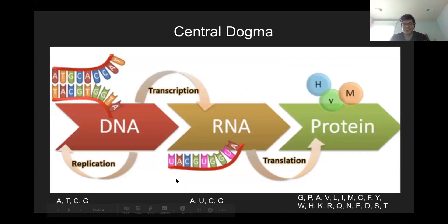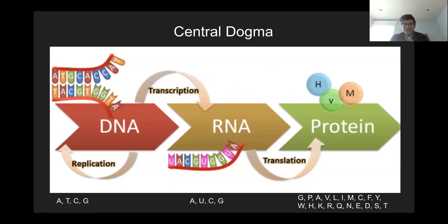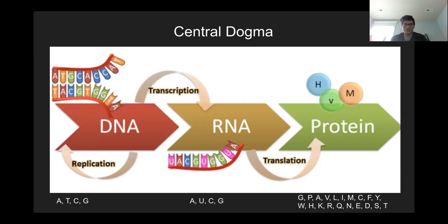In biology, a lot of terms are used interchangeably and sometimes mean the same thing. Polypeptide, amino acid, protein, residues — we'll talk about residues later. All of these refer to that chain of amino acids being put together that eventually forms a fully-folded protein.